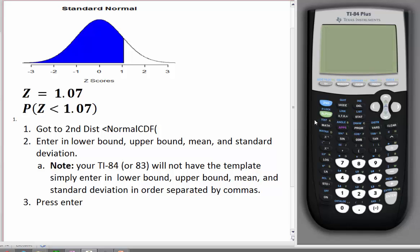Now, the first step on our calculator is go to the Second button, then to Distribution. This will be above the VARS button. Choose the option NormalCDF, so that's option number 2, and press Enter.